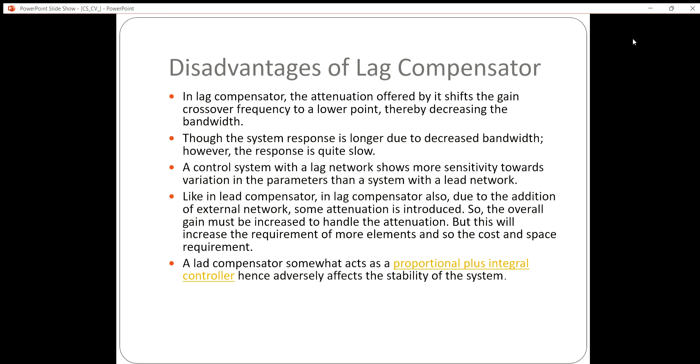A control system with a lag network shows more sensitivity towards variation in the parameters than a system with a lead network. Also, due to the addition of external network, some loss of signal is introduced.